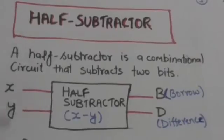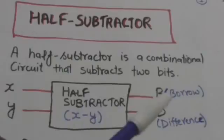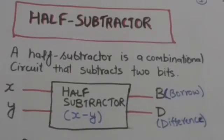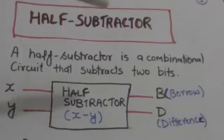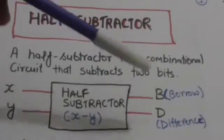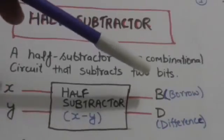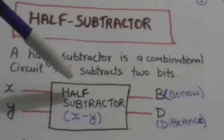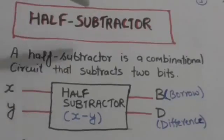The output variable denoted by D represents the difference bit — that is the result of X minus Y. The output variable B specifies whether one has been borrowed from a higher significant stage or not.